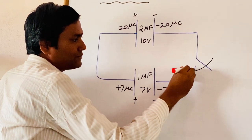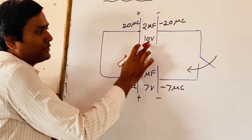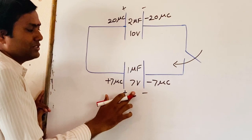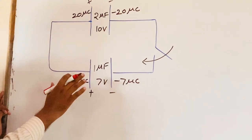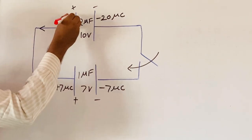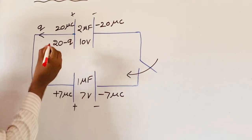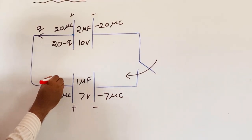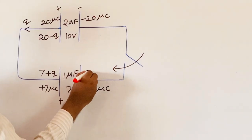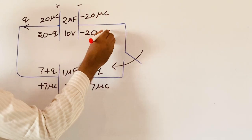Now we are closing the switch. After closing the switch, the capacitor which is charged to higher potential starts to discharge. The capacitor at lower potential starts to charge. This process will continue until both capacitors arrive at the same potential. Suppose we assume a charge Q is transferred — the present charge on the 2μF capacitor plate becomes (20 − Q), Q is added to the 1μF capacitor making it (7 + Q), the other plate becomes (−7 − Q), and the remaining plate becomes (−20 + Q).